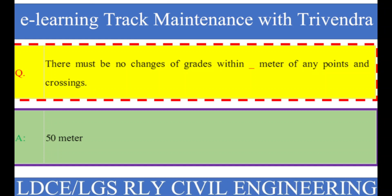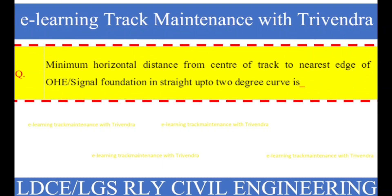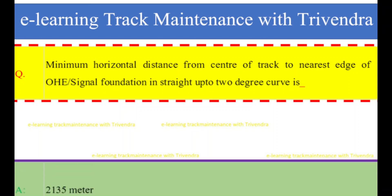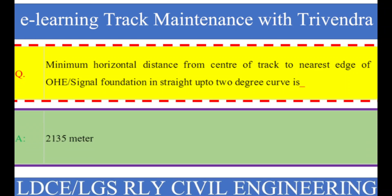Question number 53: Minimum horizontal distance from center of track to nearest edge of OHE or signal foundation in straight up to 2-degree curve is? The right answer is 2.135 meters.